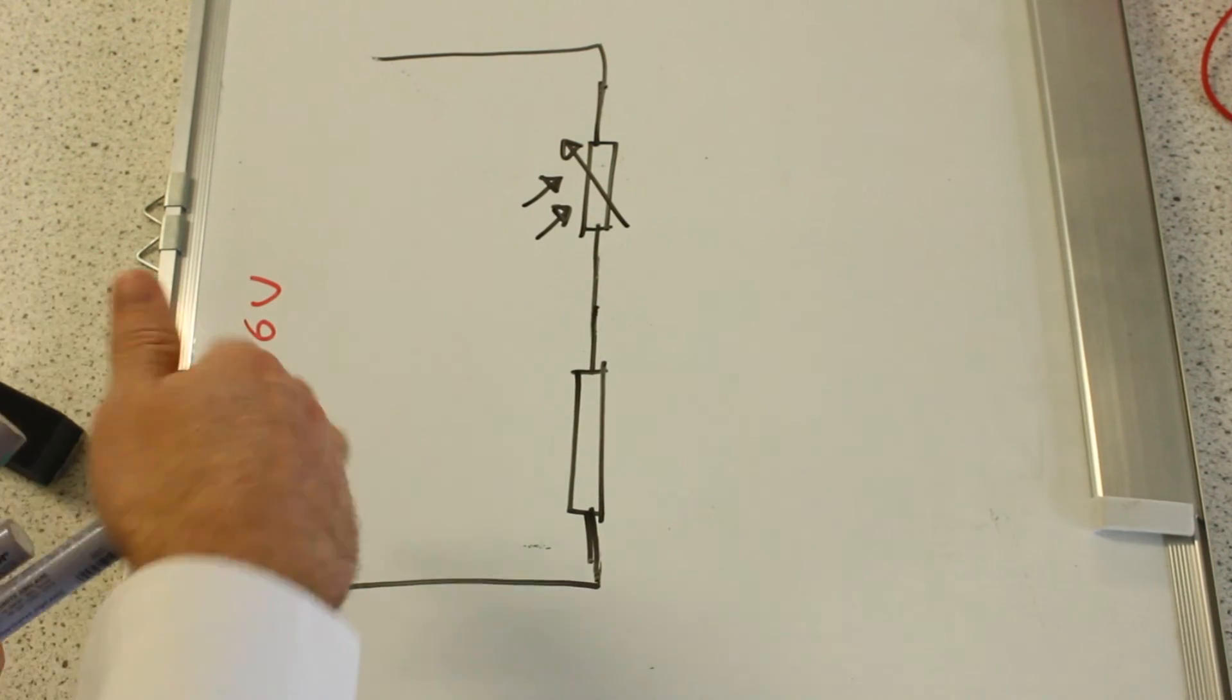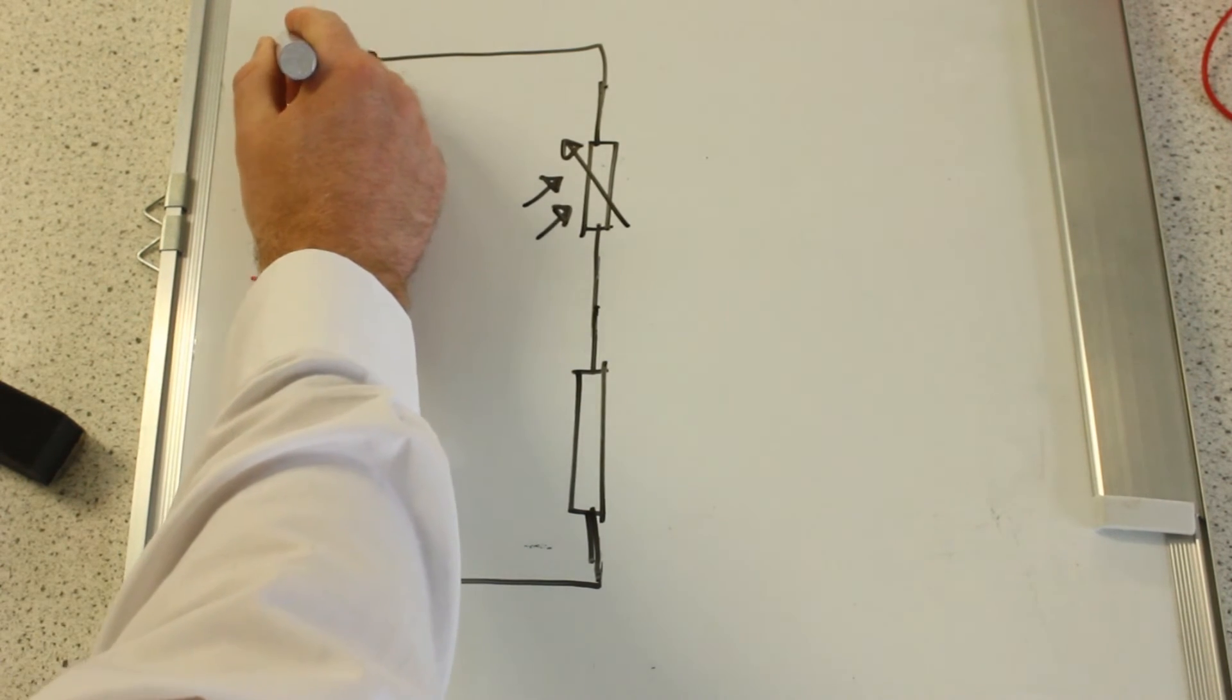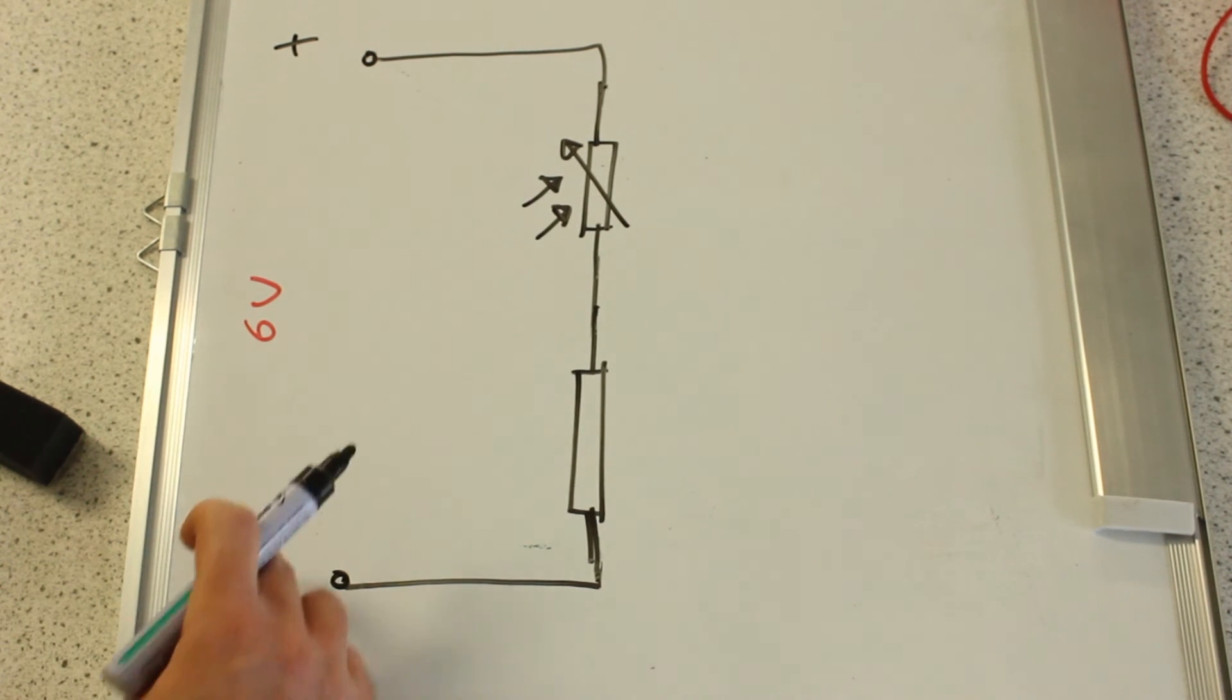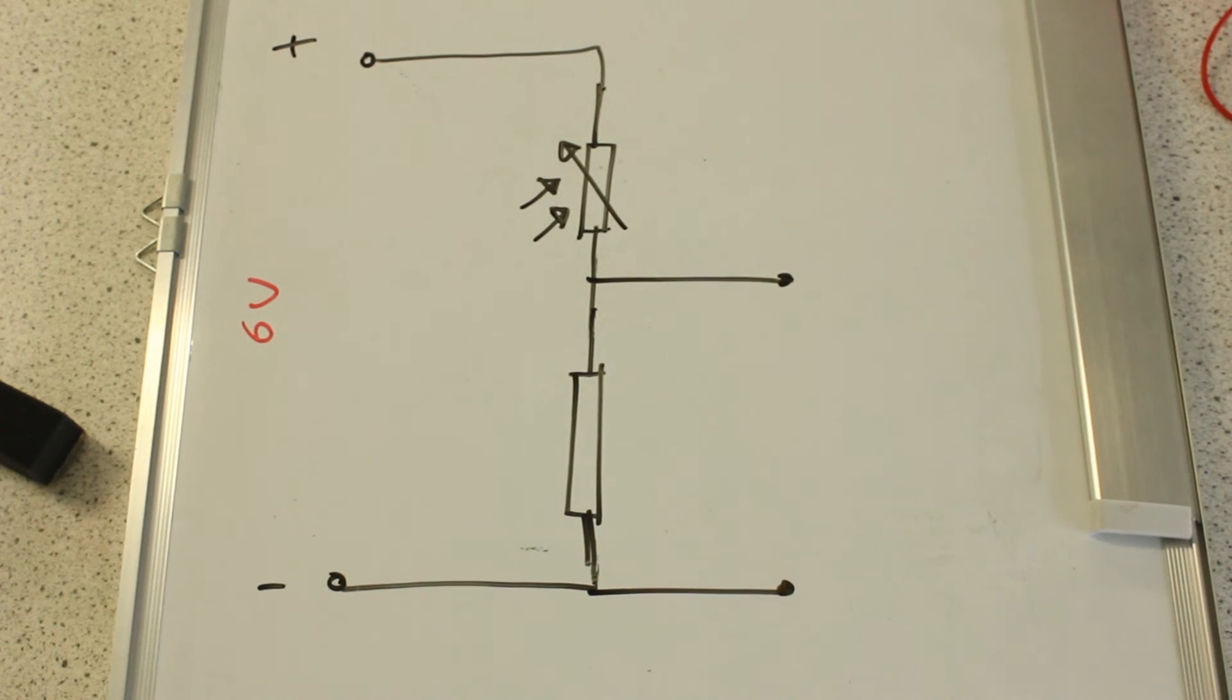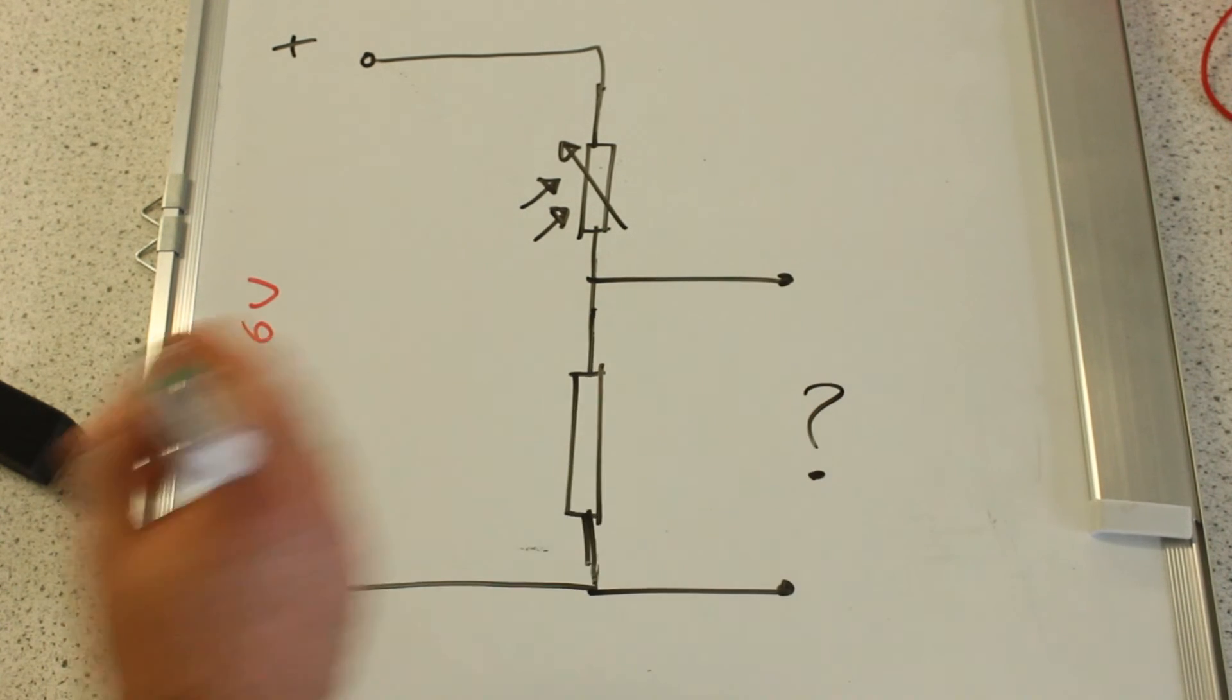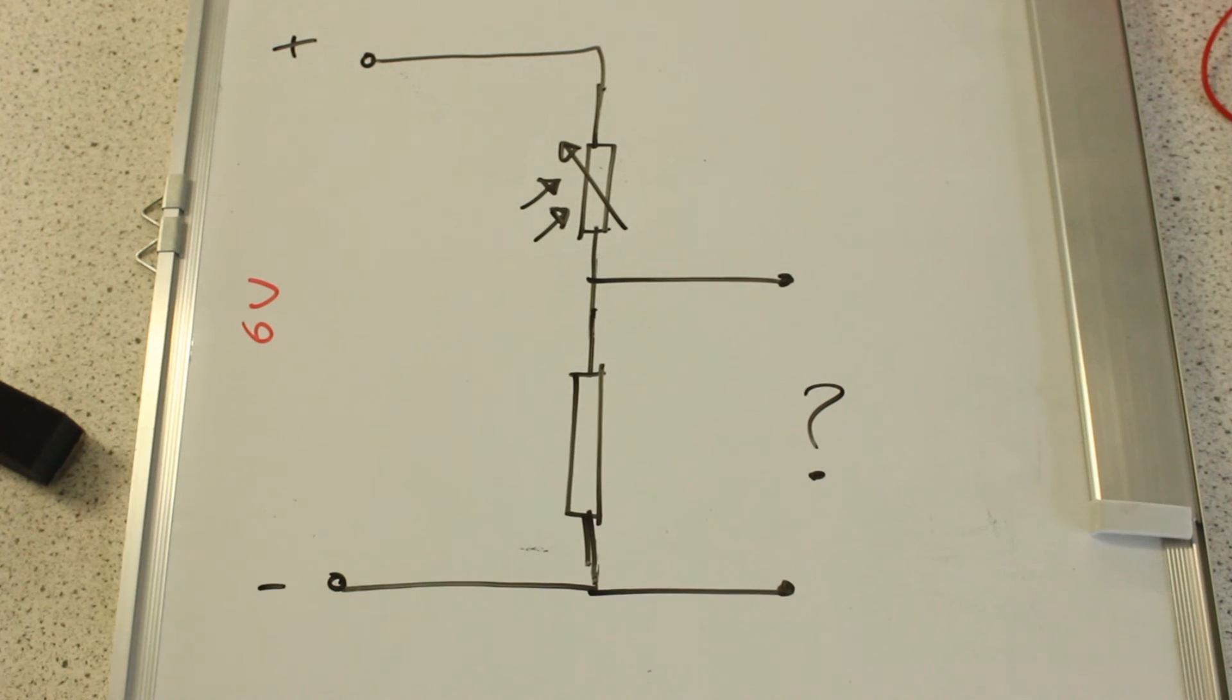And what they say is this side is the input, so they might write plus, minus and say there's 6 volts between there and there, and say this is the output and ask you to work out what the voltage is there, given a certain ratio of resistances. But you shouldn't worry about that because it's really exactly the same question that they're giving you.